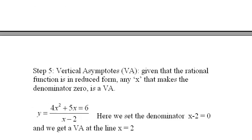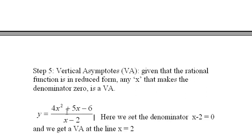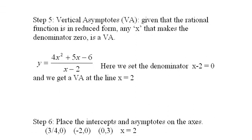Vertical asymptotes. Okay. Vertical asymptotes. And given that the function is in reduced form, and this one is. This, by the way, is negative. I'm sorry. This is, I didn't replace this. But really, it should be negative. There we go. Now it's fixed. Here we set the denominator, in this case x minus two, equal to zero. And we get a vertical asymptote on the line x equals two, because that makes this function undefined here.